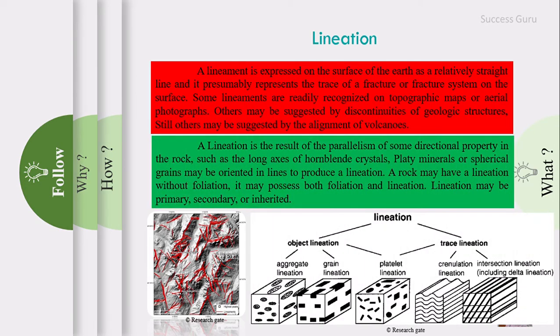Whereas a lineation is a result of parallelism of some directional properties in a rock, such as long axes of formed mineral crystals, platy minerals, or spherical grains that may be oriented in a line. A rock may have lineation without foliation, or possess both. Lineation may be primary, secondary, or inherent. To be precise, lineaments are geomorphic expressions, whereas lineations are structural concepts.